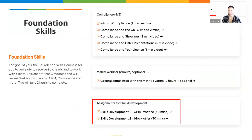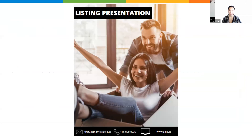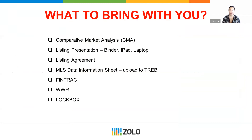Eventually getting to the listing presentation — this is available to you on the Academy. Have a listing presentation that you bring both printed and online so you can talk about the process, what they should expect, and in a seller's market, the options of holding off on an offer date or accepting preemptive offers. Definitely bring everything you need to secure the listing. Do not forget to bring a listing agreement with you. You want to wow them — you've already prepared them. If you don't have the listing agreement with you, the chances of them changing their mind are greater than if you had it right there in front of them.